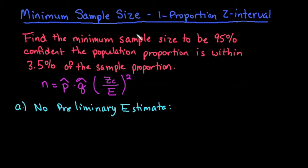For this situation we want to find the minimum sample size to be 95% confident that the population proportion is within 3.5% of the sample proportion. The formula that we use is n equals p hat times q hat times our critical value for z divided by E, all squared.